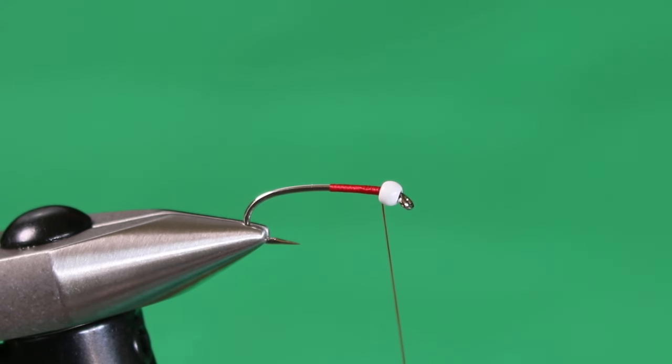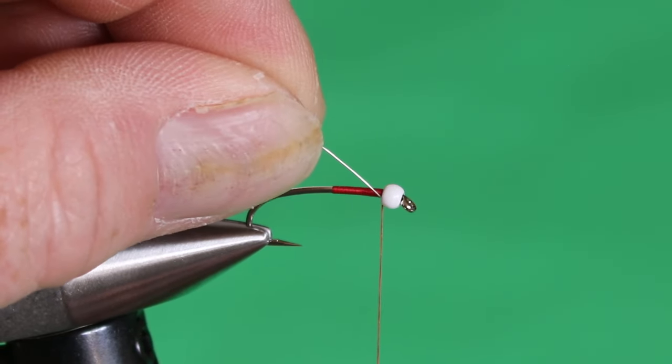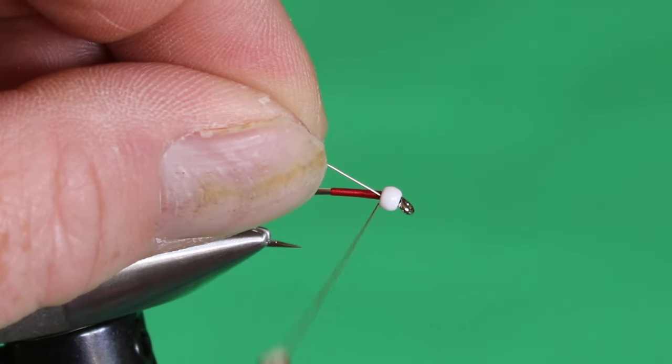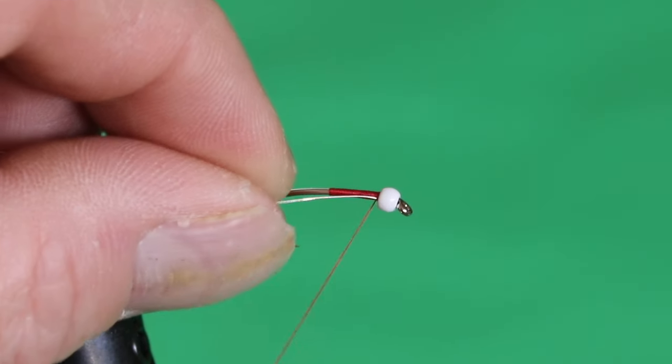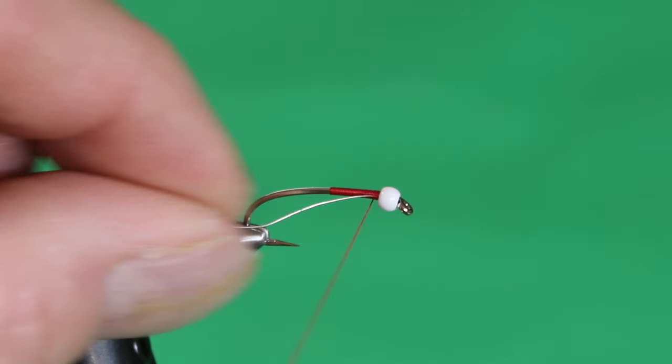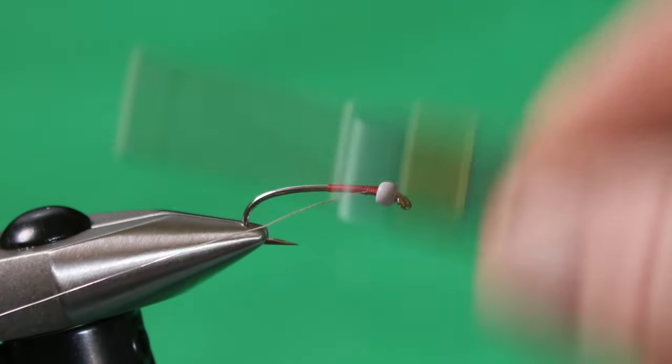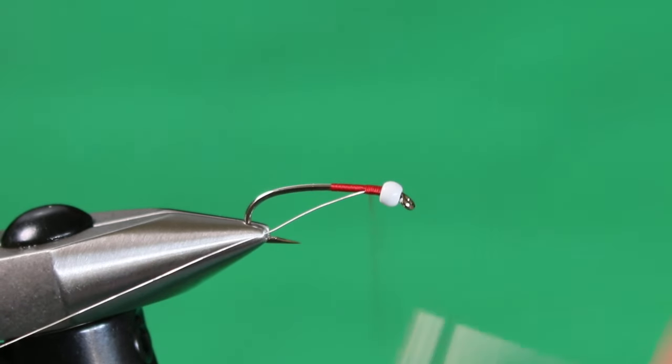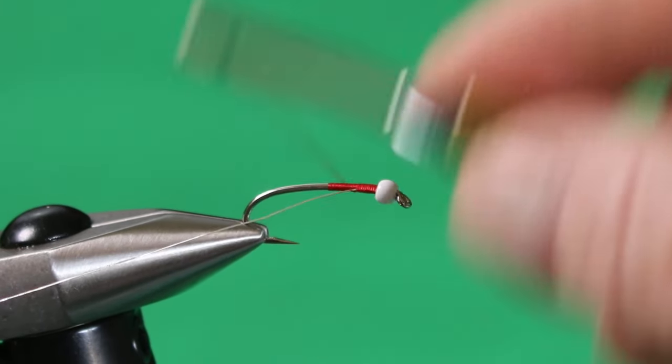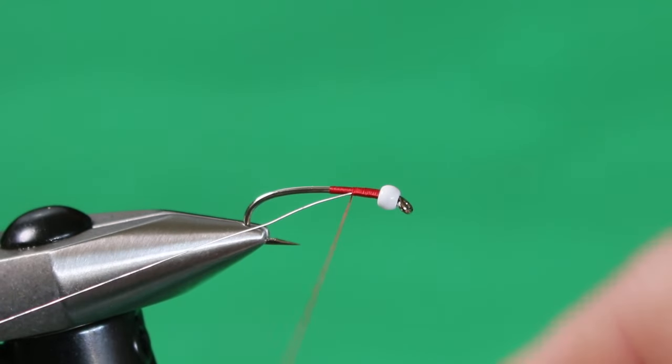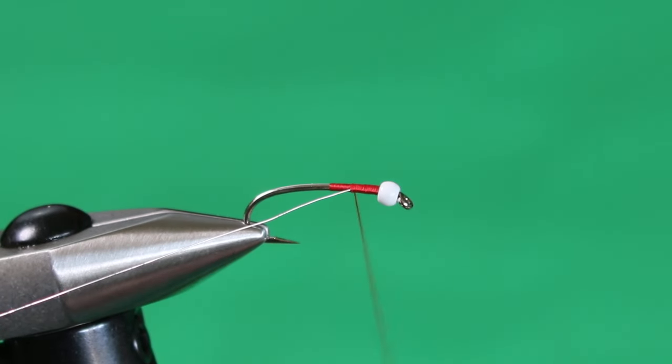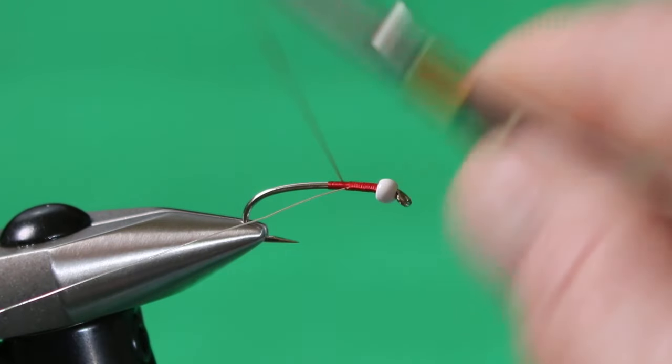For the ribbing, we're going to use some small silver wire. I'm just going to stab it into the rear of the bead to hold it in position and secure it. As I do on all my previous videos, I always like to secure my wire along the near side of the shank.